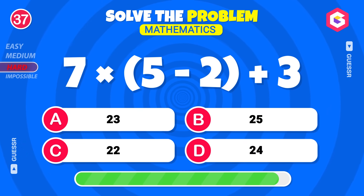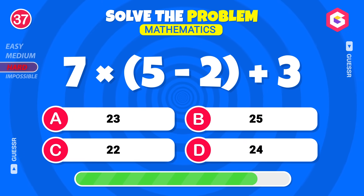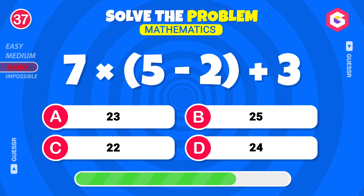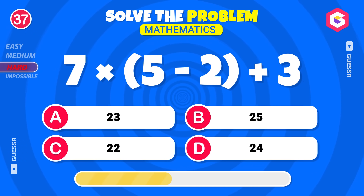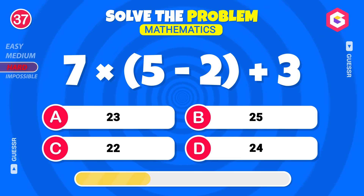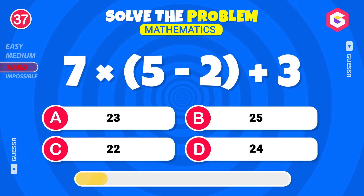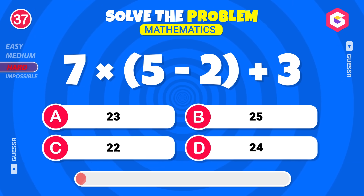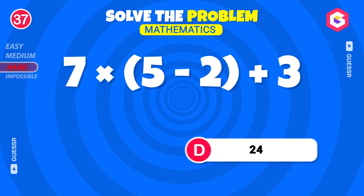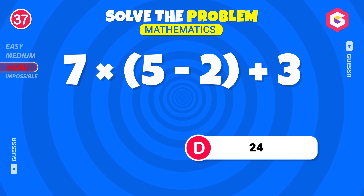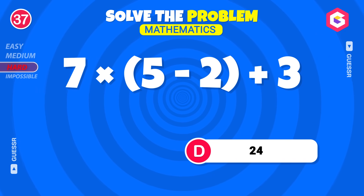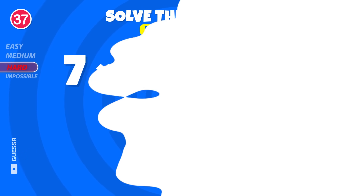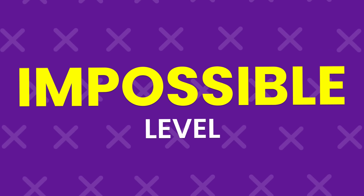What's 7 into 5 minus 2, then add 2, then add 3? Yes! 24! Only legends can conquer the impossible level!